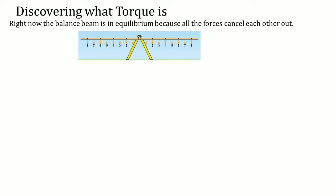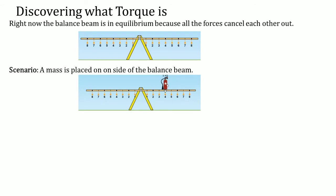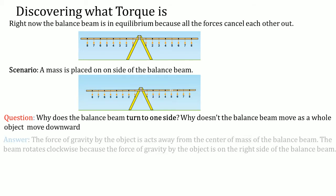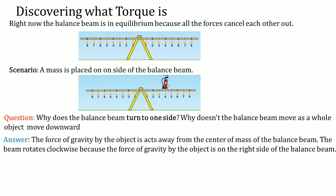Let's discover what torque is. Right now this balance beam is in equilibrium because all the forces cancel each other out. You can tell visually because this balance beam is horizontal. A mass is now placed on one side of the balance beam — notice that the mass is being placed on the right-hand side, and it's causing that balance beam to no longer be in equilibrium. The question is: why does the balance beam turn to one side? Why doesn't the balance beam move as a whole object downwards? The reason is that the force of gravity that the 5 kg object is applying downwards is acting away from the center of mass of the balance beam.